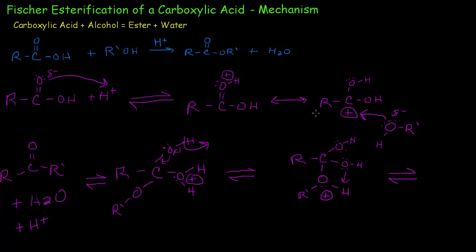So those are the steps of Fischer esterification of a carboxylic acid — there's the mechanism. I know there's a lot on the board, but just follow the arrows and rewind if needed. Try writing it out yourself a couple of times. For further practice, plug in real substituents for the R groups — any kind of carbon chain or carbonyl — and see what you get. Just remember to follow the steps and you should be fine.